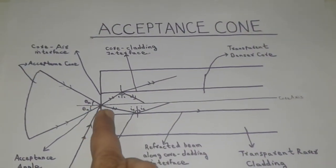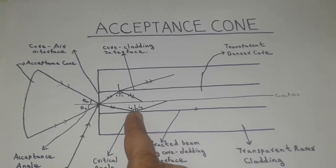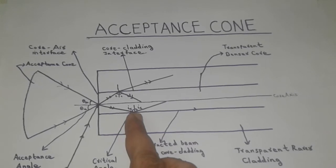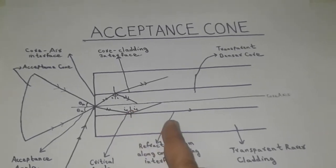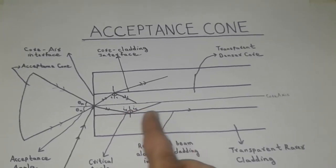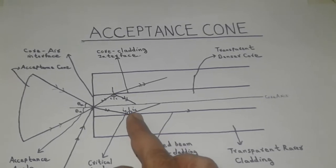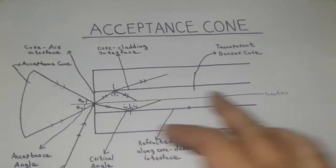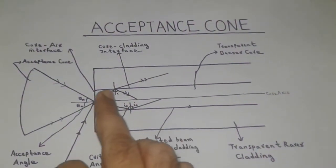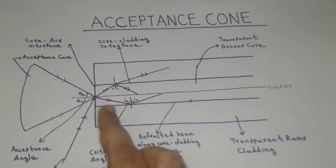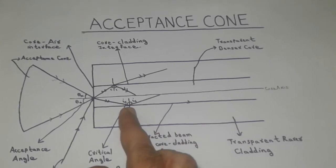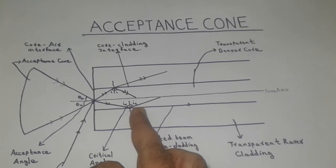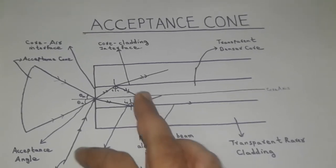On the other hand, when a light beam is incident at the core-cladding interface at an angle equal to or greater than the critical angle, then no refraction into the rarer cladding happens. As such, the entire beam will be totally reflected back into the denser core. Hence, whenever a light beam is incident at an angle equal to or greater than the critical angle, it will not contribute to any fiber loss.